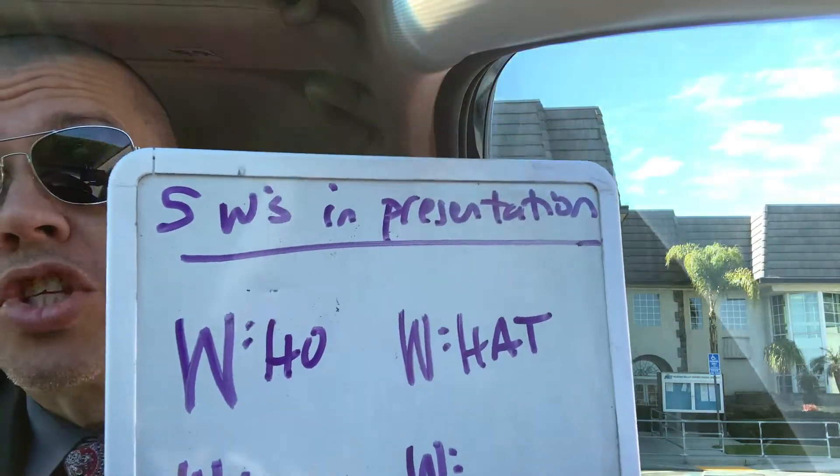The first W: who are you? Your name, and if appropriate, your title. Then you're moving on to the second W: what is it that you do? Tell us what you do in a quick fashion. Who are you, and then what is it that you do? What is unique about you that got you the opportunity to present?